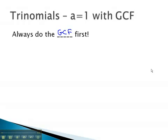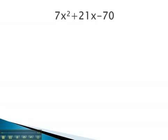For example, in this problem, we see 7x² + 21x - 70. We see that each term is divisible by 7. Factoring out the 7 will leave us with x² + 3x - 10.